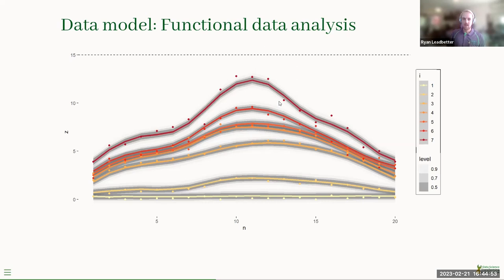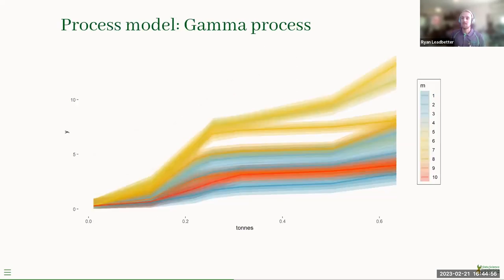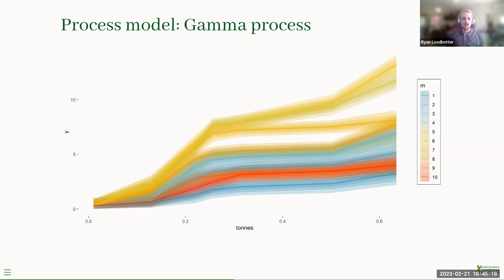Moving to the process model, we're concerned about modeling the coefficients of the spline. We can see the evolution of the coefficients over time: red corresponds to the right side of the belt, blue to the left, and yellowish-green to the center. Analogous to what we saw on the previous slide, the center of the belt wears more than the edges. We also see that the degradation is not exactly constant — there's some heterogeneity in the wear rate.